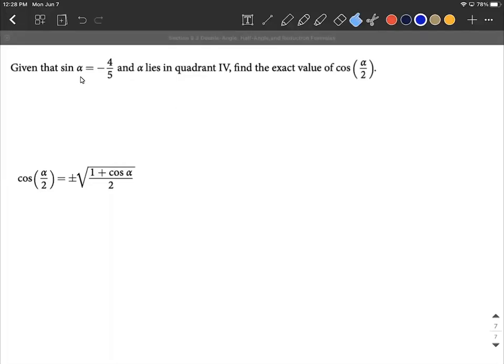On this example, we know sine of alpha is negative 4 over 5. We also know that alpha itself lies in quadrant number four. Our goal here is to find the half angle of cosine, so cosine of alpha over 2 based on this information.